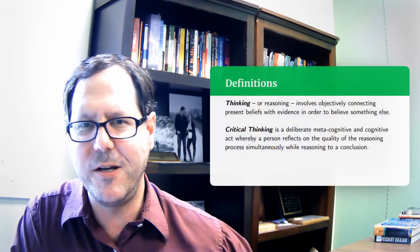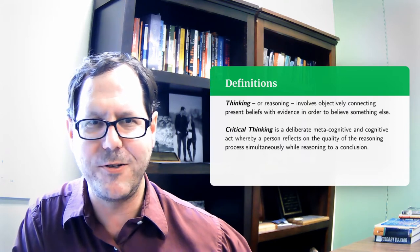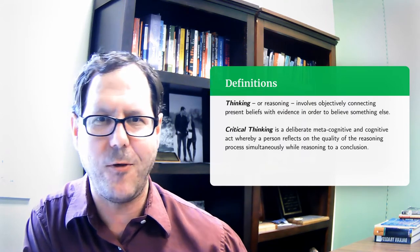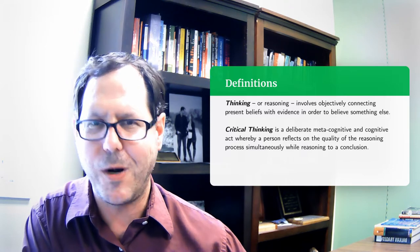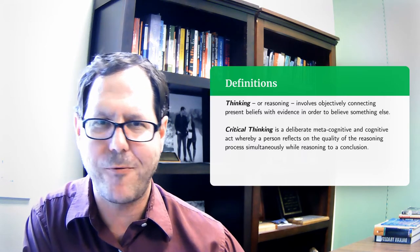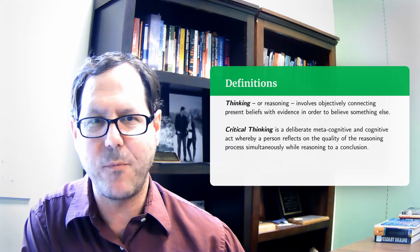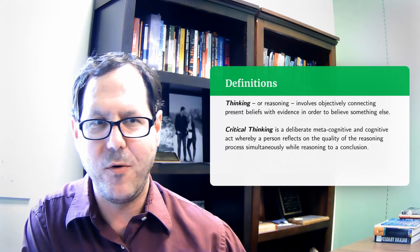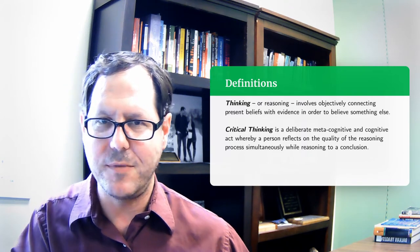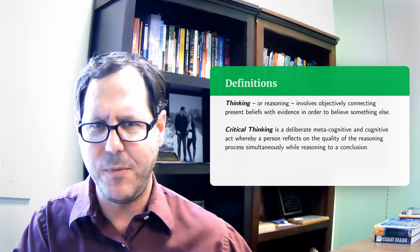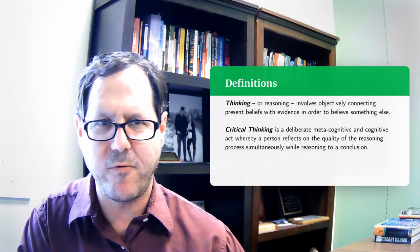So I'll start with some quick definitions. These are Moore's definitions, but I think they're useful. Thinking or reasoning involves objectively connecting present beliefs with evidence in order to believe something else. So I'm taking the information I have, fitting it together, and building a new idea out of it. Pretty straightforward.